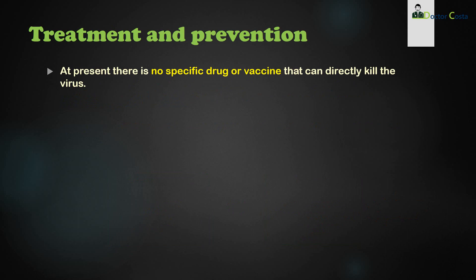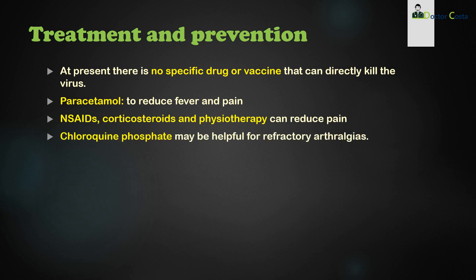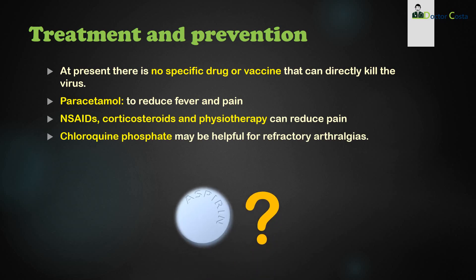At present, there is no specific drug or vaccine that can directly kill the virus. Paracetamol can be used to reduce fever and pain. NSAIDs, corticosteroids, and physiotherapy can reduce pain. Chloroquine phosphate may be helpful for refractory arthralgias. Regarding aspirin: we can give aspirin to chikungunya patients, but only after being 100 percent confirmed that they have chikungunya and do not have dengue or a co-infection with both.